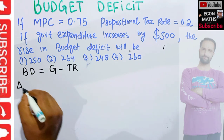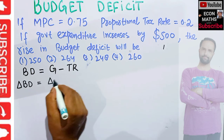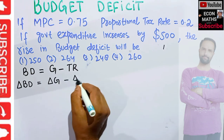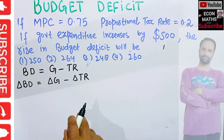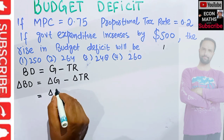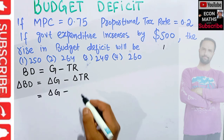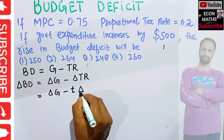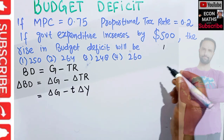Change in budget deficit — written as ΔBD — will be equal to change in government expenditure minus change in tax revenue. This change in tax revenue will be simply equal to tax rate times change in income.